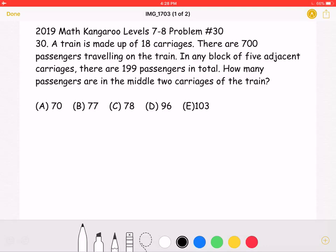This is the 2019 Math Kangaroo Level 7-8 Problem Number 30. A train is made up of 18 carriages. There are 700 passengers traveling on the train. In any block of 5 adjacent carriages, there are 199 passengers in total.